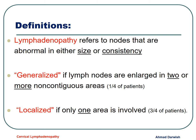Some definitions regarding lymphadenopathy: it refers to nodes that are abnormal in size and consistency. Lymphadenopathy is generalized if nodes are enlarged in two or more non-contiguous areas — this accounts for about one quarter of patients. Localized lymphadenopathy, which is more common at three quarters of patients, means the lymph nodes are enlarged in one area.